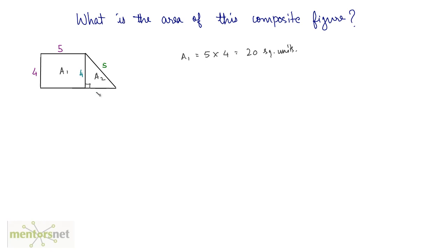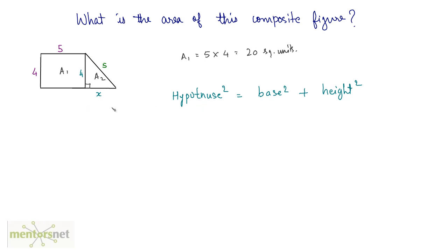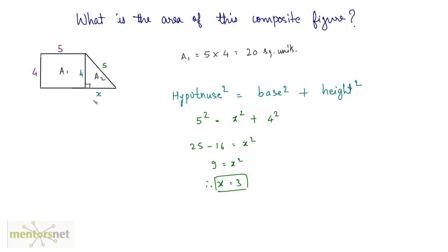We need the length of the base. Being a right-angle triangle, we can apply the Pythagorean theorem: hypotenuse squared equals base squared plus height squared. The hypotenuse is the largest side, which is 5. So 5 squared equals x squared plus 4 squared. That gives us 25 minus 16 equals x squared, so 9 equals x squared. Therefore x equals the square root of 9, which is 3. The base is 3 units.